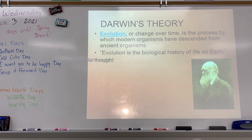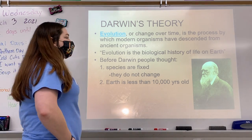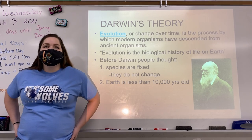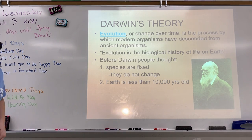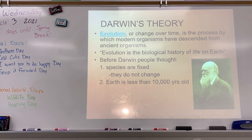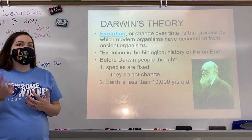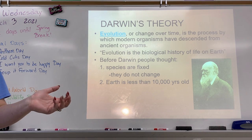Who do we have to thank for this theory of evolution? His name is Darwin. He was essentially the father of evolution — he went out and did a bunch of research and put the theory together. He said that evolution, which is a change over time, is the process by which modern organisms have descended from ancient organisms. The big question people had was: how did we get here, and how did we get what we have today?